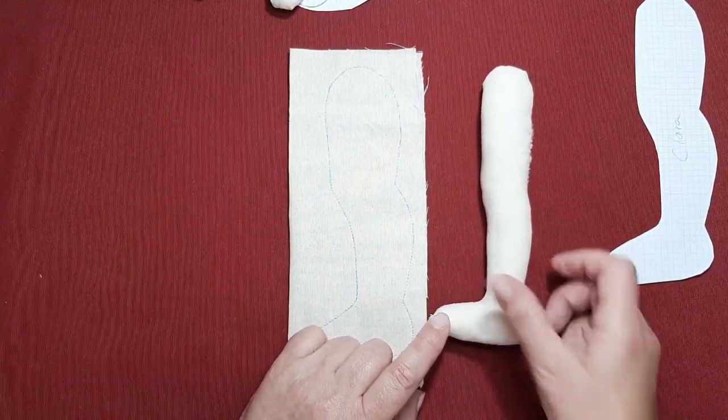Entonces vamos a cosernos la manga. Vamos a poner derecho con derecho. Y vamos a unir estas dos líneas. ¿Veis? Las unimos. Y ahora esta línea, esta parte de la manga, la llevamos hasta la otra parte del vestido. Y de esta forma lo que hacemos es cerrarlo. Y nos queda así.